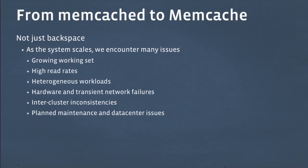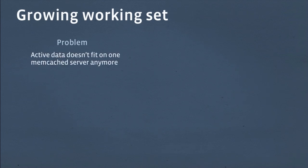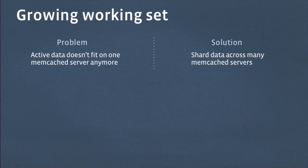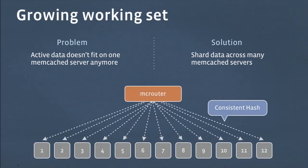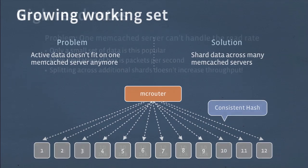Going from Memcached to Memcache is not just a backspace, unfortunately. As the system scales, we encounter many issues: growing working sets, high read rates, heterogeneous workloads — the list goes on. When we have a growing working set, the active data doesn't fit into your one Memcached box anymore. The standard solution is to shard the data across more Memcached boxes — almost every client library for Memcached has this functionality built in today. McRouter uses a consistent hash, so you can expand or shrink the pool with the fewest number of key switches.